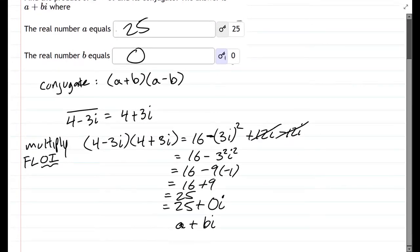So remember, conjugate multiplication is always going to be a squared minus b squared. The only difference happens for us when you have an imaginary term. It's a squared minus bi squared. The i squared is negative 1, so it's minus a negative, or plus b squared. So that's how conjugates work when they're complex.